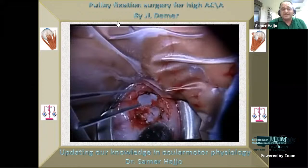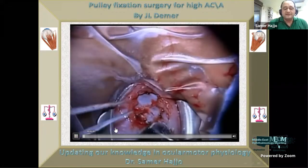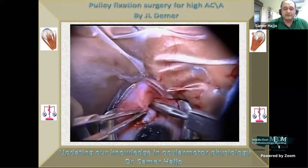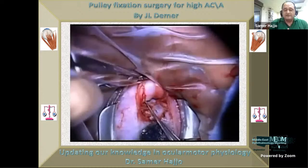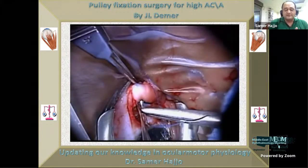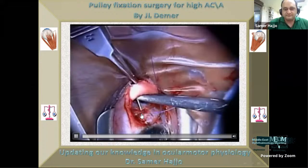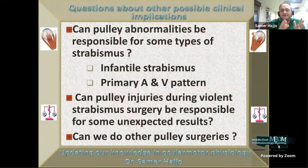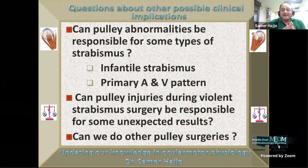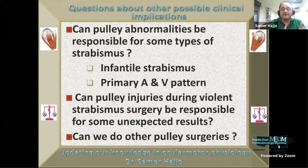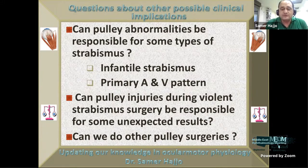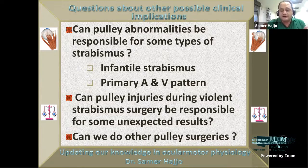De Marco also suggests surgery on the pulley: isolating the medial rectus pulley and fixing it on the sclera for reducing convergence. Other possible clinical implications include whether pulley abnormalities or pulley injuries during strabismus surgery may be responsible for some unexpected results, and whether we can perform other pulley surgeries.